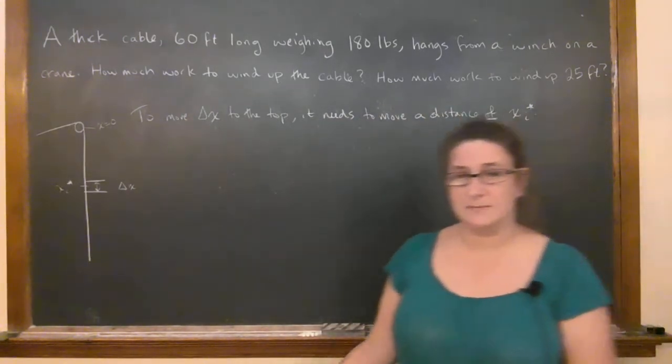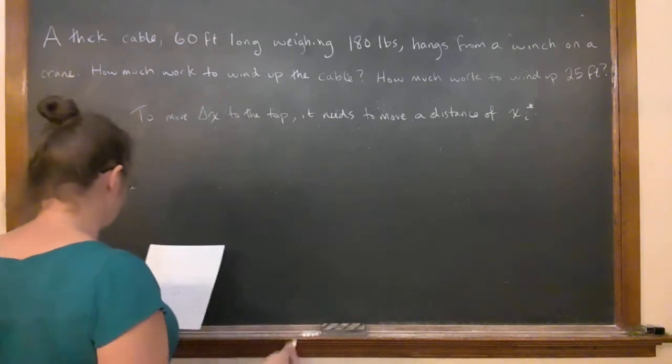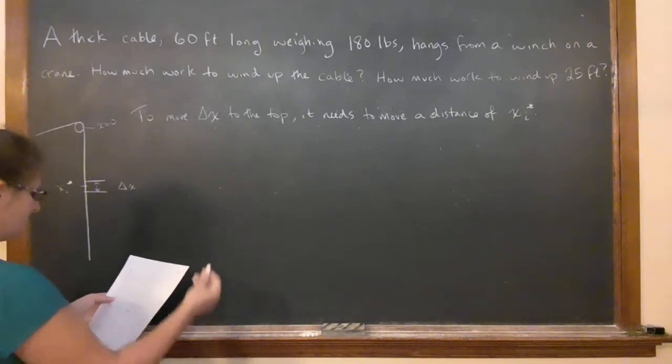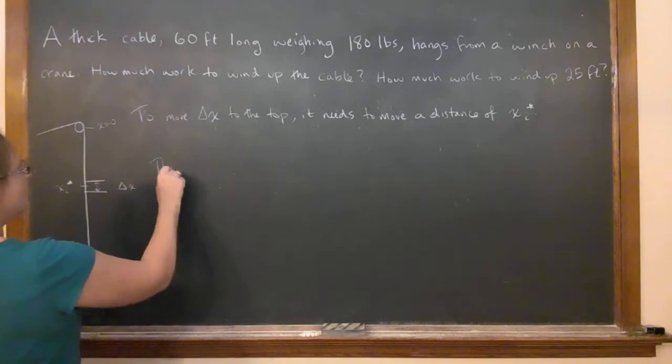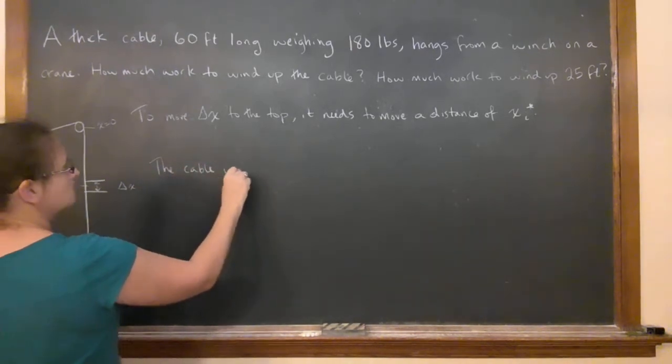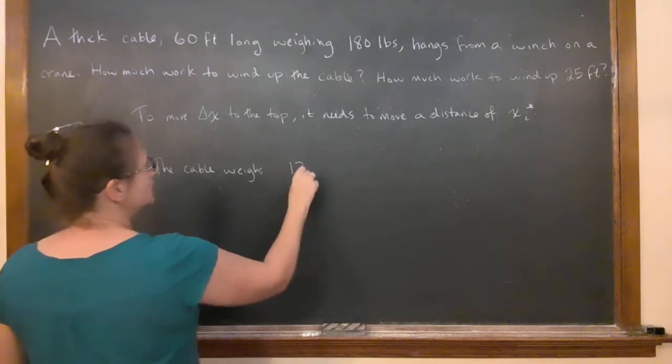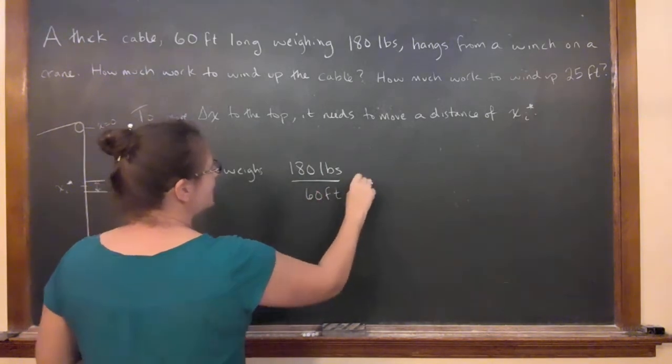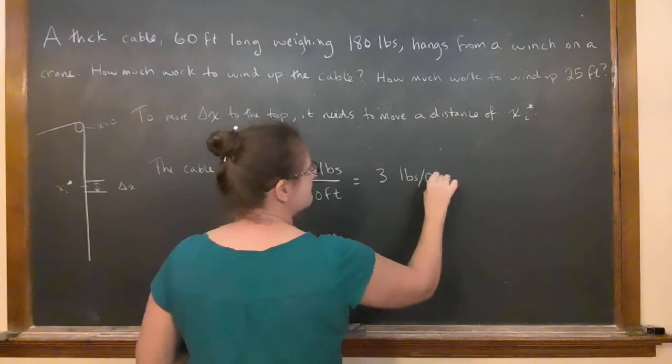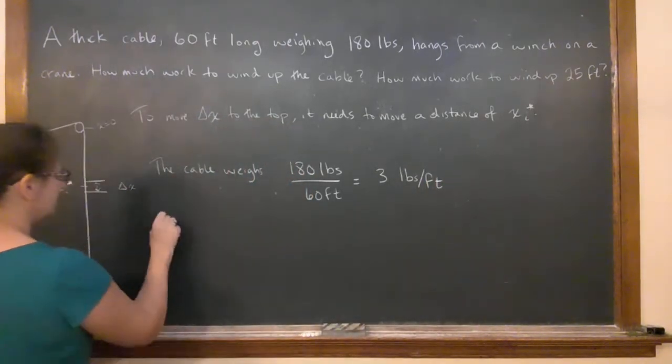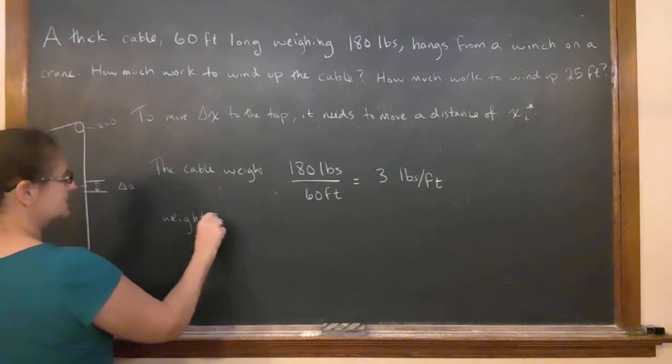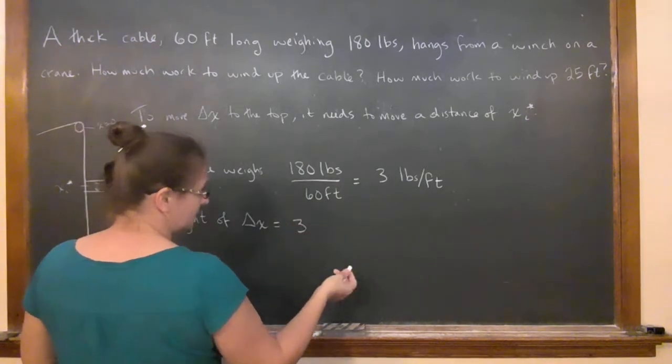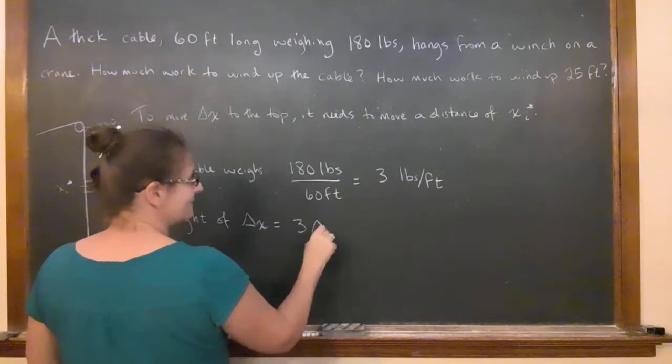We know that work is force times distance, and we just have to figure out what the force is going to be. What is the weight of this thing? So the total cable weighs 180 pounds, but there's 60 feet of it, so that gives you 3 pounds per foot. Which means that the weight of your little section delta x is just 3 pounds per foot times delta x, the distance, so we're going to have 3 delta x.